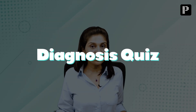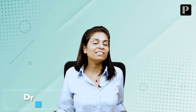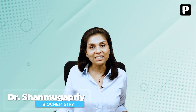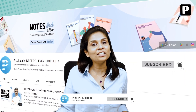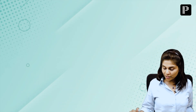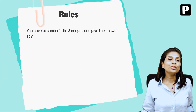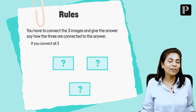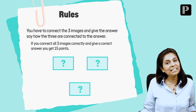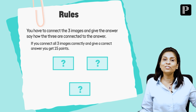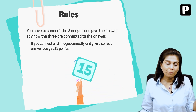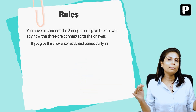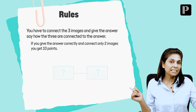Hi everyone, welcome back to Diagnose Quiz, Prep Ladder's attempt to give you a fun learning experience. Don't forget to subscribe to this channel and click the bell icon to receive notifications. A quick recollection of the connect drone rules: I will be showing you three images, and you're supposed to find out an appropriate process, technique, or disorder which connects all three images. If you get the right answer, you get 15 points.